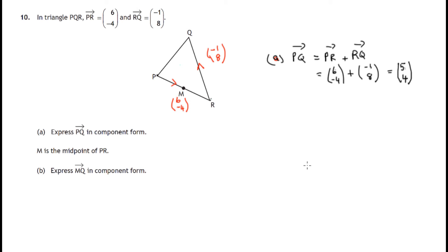We're told M is the midpoint of PR. So PM is the same length as MR, M is the midpoint of PR, and we're asked to express the journey from M to Q in component form.